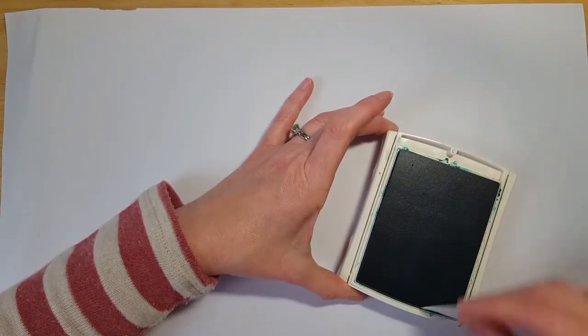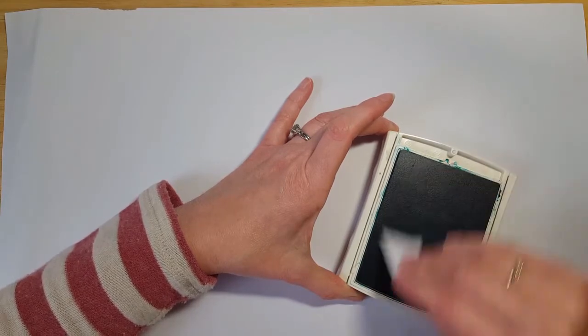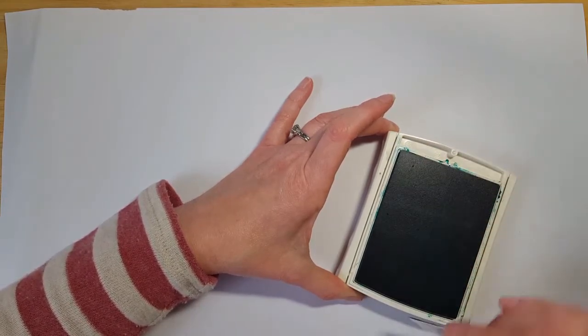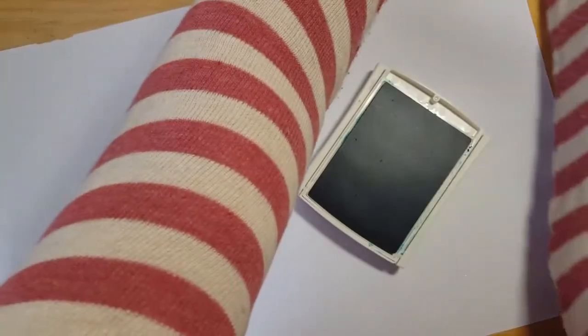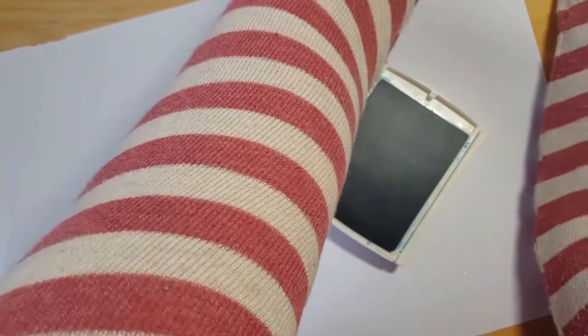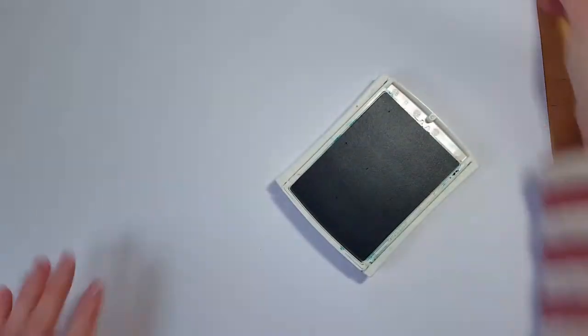And I probably should have stamped with this before I re-inked it so you could have seen the difference. But now that that's done, I'll just take a little piece of scrap paper and clean off my little spreading tool here. Trying not to get it in the ink pad. And so then that's all cleaned off.